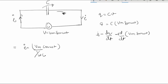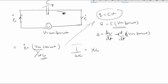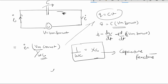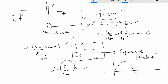Since dQ equals C dV, C appears in the expression. Thus 1 upon omega C equals Xc, which is the capacitive reactance of the circuit. The current I is given by Im sine omega t as the peak value. If you plot the voltage and the current, the current will always be leading by pi by 2.